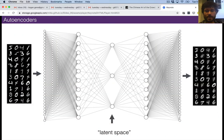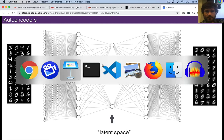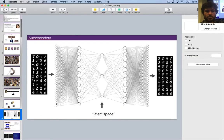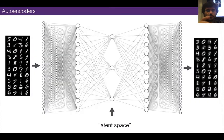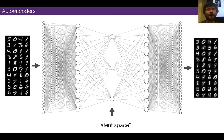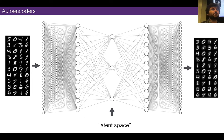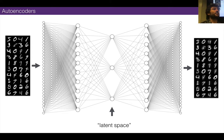Now, PCA — you can look up the math. We didn't cover it in much detail, but the math is all standard linear algebra: just multiplications and additions. It does a pretty good job. But something that would do an even better job is a neural network. The first one we can look at is an autoencoder.